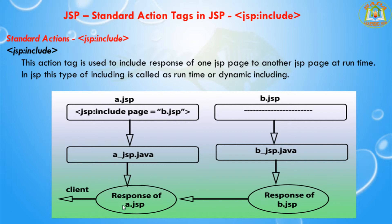For the directive include, one servlet is created combined for both the source and destination pages. For the action include, one servlet is created separately for the source and one servlet is created separately for the destination. The directive include is recommended for static destinations like HTML, while the action include is recommended for dynamic destinations like JSP and servlets.